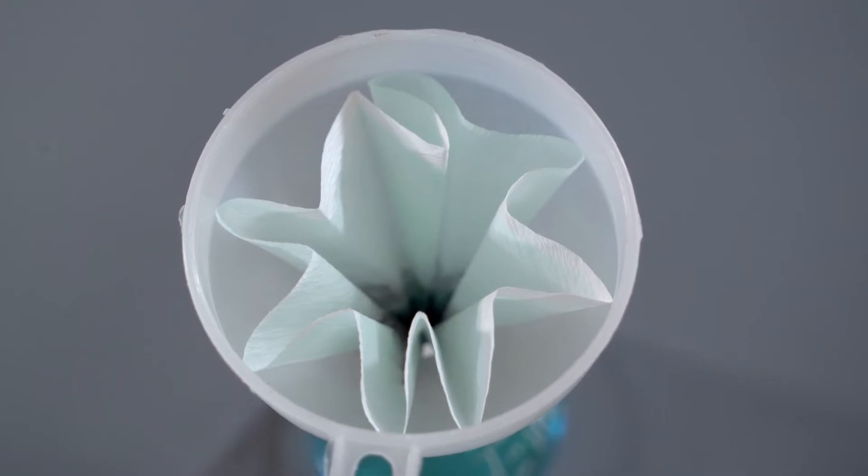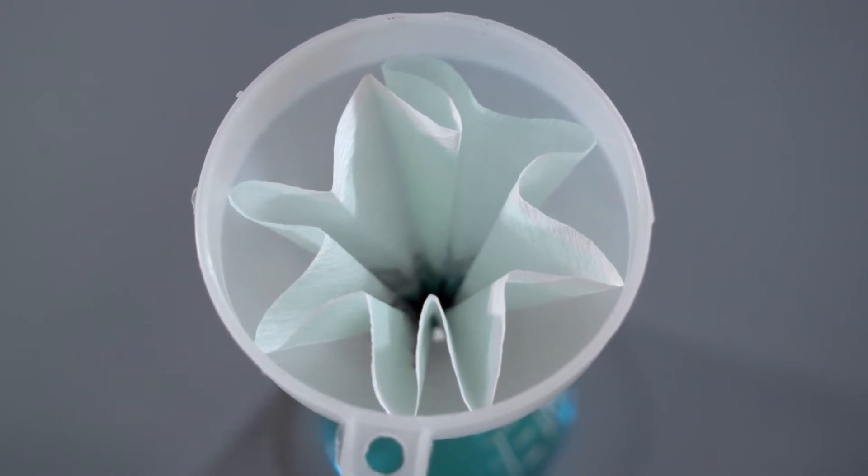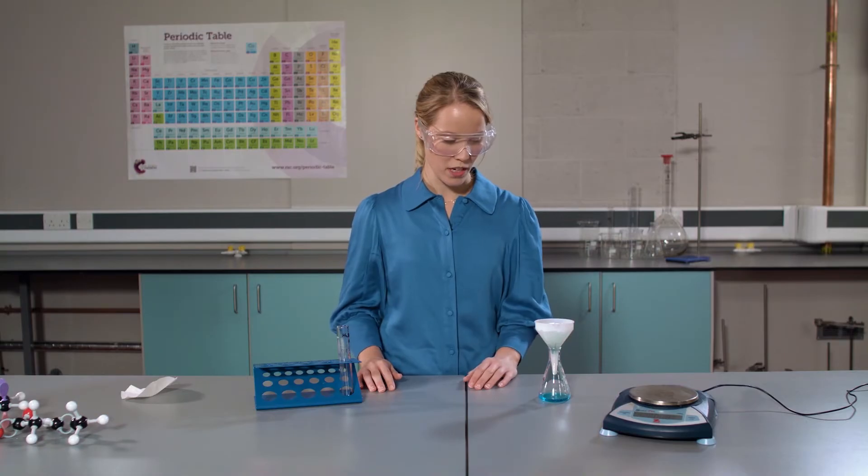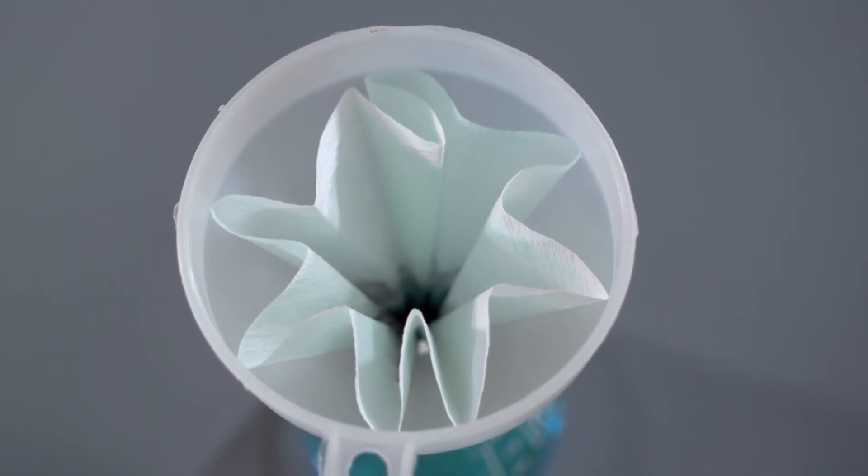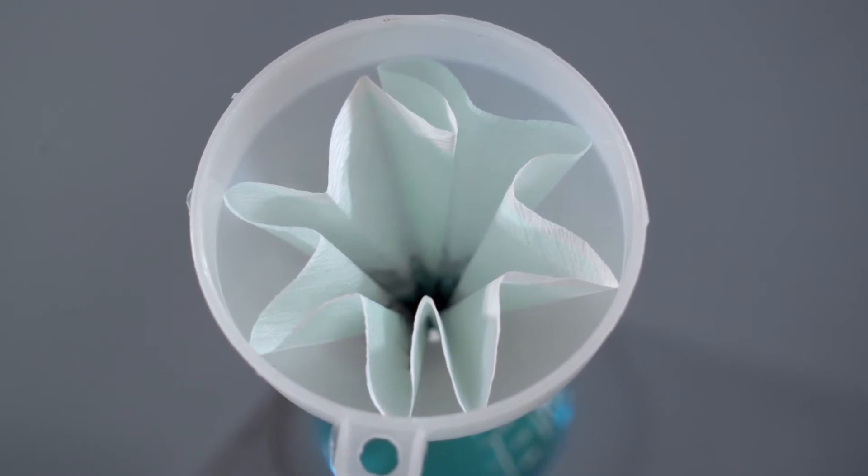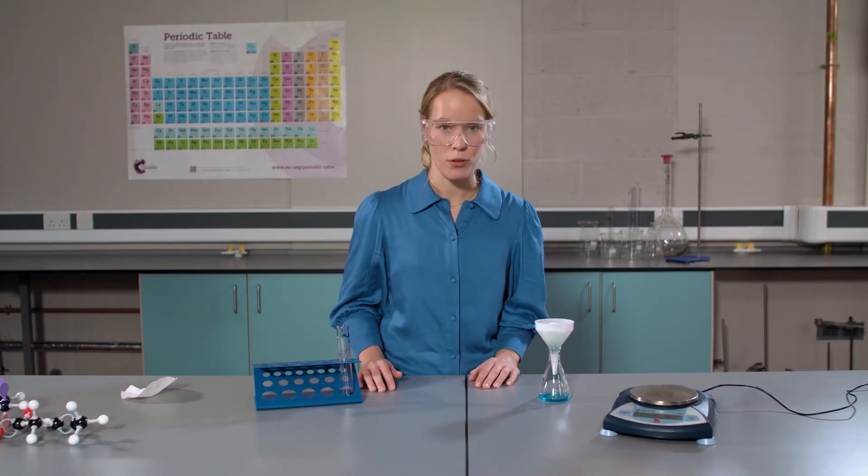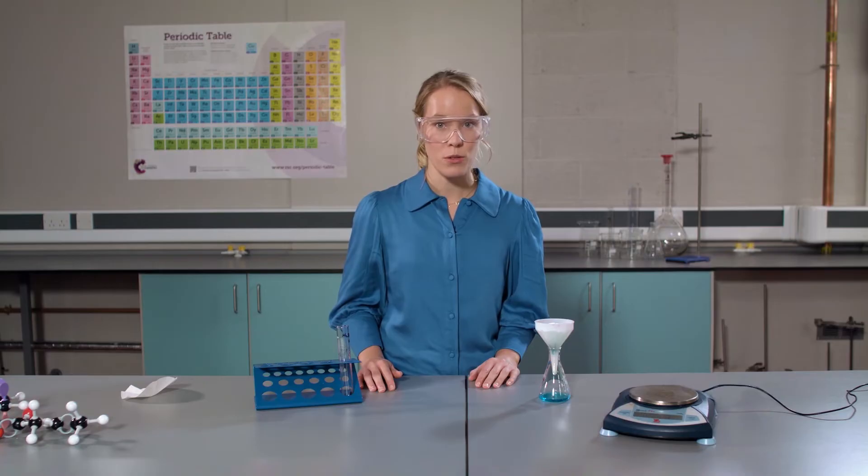The copper sulfate solution is now dripping through the filter paper, down the filter funnel, into the conical flask, and inside the filter paper we can see some black copper oxide. The copper oxide is insoluble so cannot go through the filter paper. This is called the residue.